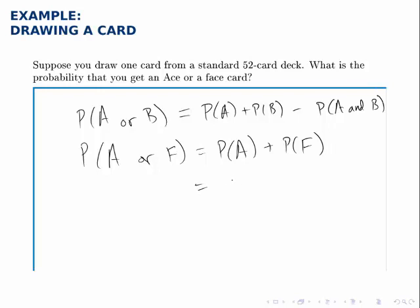The probability of drawing an ace, well there are 4 aces, the ace of clubs, diamonds, hearts and spades, and there are 52 total cards.